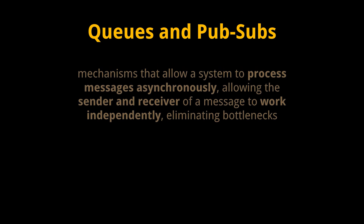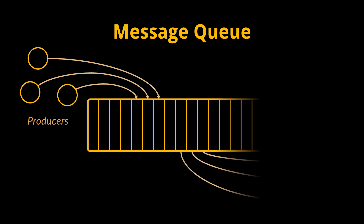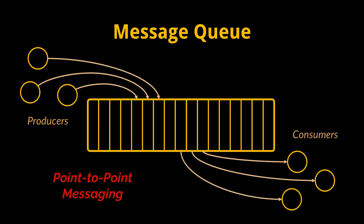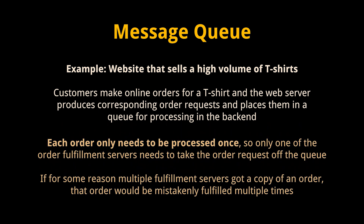The last couple of concepts we're going to briefly cover are queues and pub/sub. Both are mechanisms that allow a system to process messages asynchronously, which basically allows the sender and receiver of a message to work independently, eliminating bottlenecks. In message queues, producers push new messages to a named first-in-first-out queue which consumers can then pull from. Message queues are also called point-to-point messaging because there is a one-to-one relationship between a message's producer and consumer. A simple example could be a website that sells a high volume of t-shirts — consumers place orders, the web server produces order requests and places them in a queue, and each order only needs to be processed once by one fulfillment server.